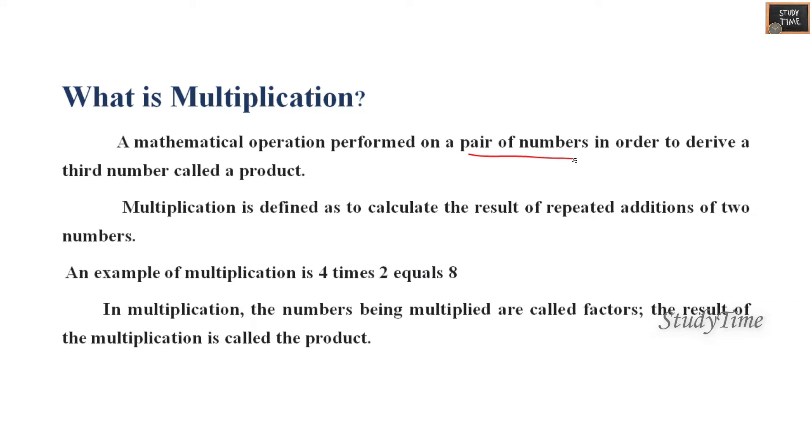First let us see what is multiplication. It is a mathematical operation performed on a pair of numbers in order to derive a third number called the product. It is also defined as the repeated additions of two numbers. For example, multiplication is four times two equals eight, so that is two plus two plus two plus two. This can also be said as two into four equal to eight.